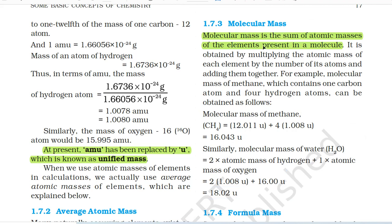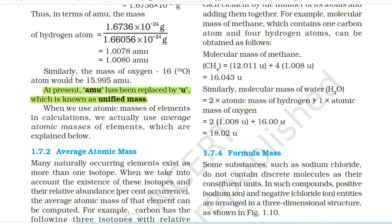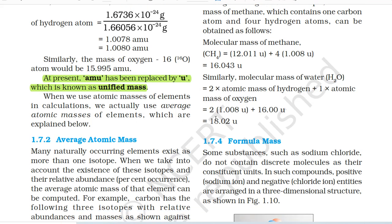1.7.3 Molecular Mass. Molecular mass is the sum of atomic masses of the elements present in a molecule. It is obtained by multiplying the atomic mass of each element by the number of its atoms and adding them together. For example, molecular mass of methane (CH₄) = 12.011u + 4 × 1.008u = 16.043u. Similarly, molecular mass of water (H₂O) = 2 × 1.008u + 16.00u = 18.02u.